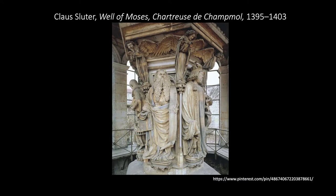This marvelous piece in Dijon, France, by Klaus Slueter from the very early 15th century was originally only the base of a much more elaborate sculptural group portraying a large freestanding crucifixion. The un-Gothic freestanding figures originally above this base were destroyed during the French Revolution, but the supporting sculptures that remain — the Old Testament figures surrounding the Well of Moses — show how far Slueter had come from Gothic tradition towards a new spirit of naturalism. They are portrayed as distinct individuals with distinct psychologies, and their drapery is very un-Gothic, with swirling volumes giving the figures mass and energy.